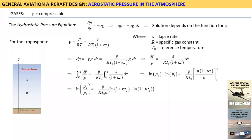Now look at the illustration to the left. The variable Z1 is the elevation at the ground level — it is equal to zero. The variable Z2 is the altitude of interest; it is where we want to calculate the pressure. It is preferable to call it H for height.